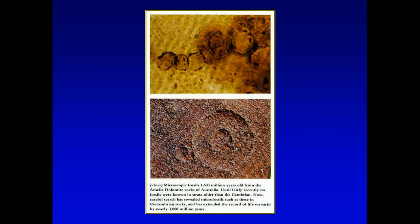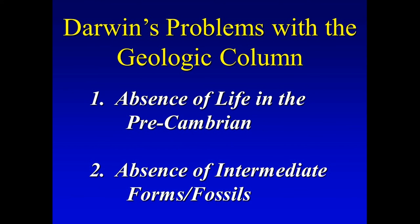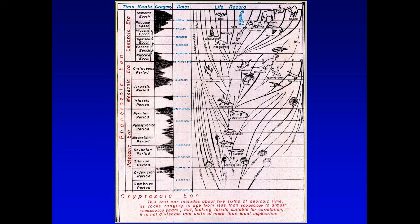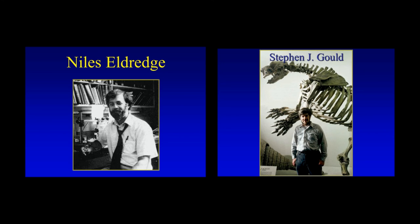These things do not look like algae to me — they're microscopic fossils. Darwin identified absence of life in the pre-Cambrian and absence of intermediate forms as major problems. Niles Eldridge and Stephen Jay Gould both made telling statements. Eldridge admitted: 'An awful lot of fantasy has gotten into the textbooks as though it were true — for instance, the horse evolution exhibit at the American Museum of Natural History, presented as literal truth in textbook after textbook. That's lamentable.'